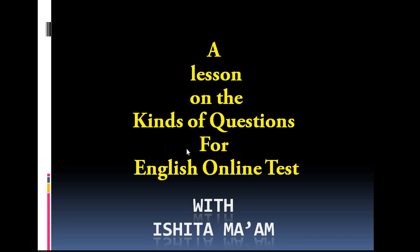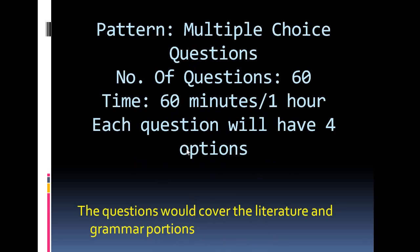The pattern is multiple choice questions, which you know by this time. The number of questions you are going to get is 60, and the time given is 60 minutes or one hour. Each question will have four options. With 60 questions, you need to be very fast while doing it, but keeping your patience and confidence. The questions for English will cover literature and grammar — we are not including the writing part this time, as MCQ format doesn't allow for it.